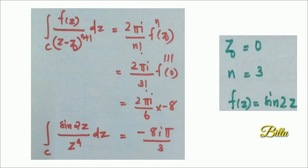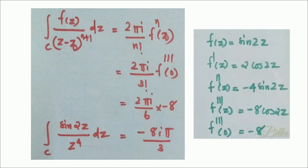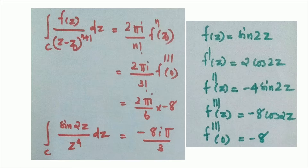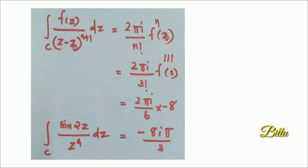Next we evaluate f‴(0). We have f(z) = sin(2z), so f′(z) = 2cos(2z), f″(z) = −4sin(2z), and f‴(z) = −8cos(2z). Putting z = 0: cos(0) = 1, so f‴(0) = −8. Replacing in Cauchy's Integral Formula for derivatives gives 2πi divided by 6 times (−8), which equals −8iπ/3.